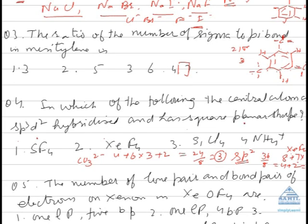sp3d2 hybridized has square planar shape. sp3d2 means seven orbitals are involved in hybridization.